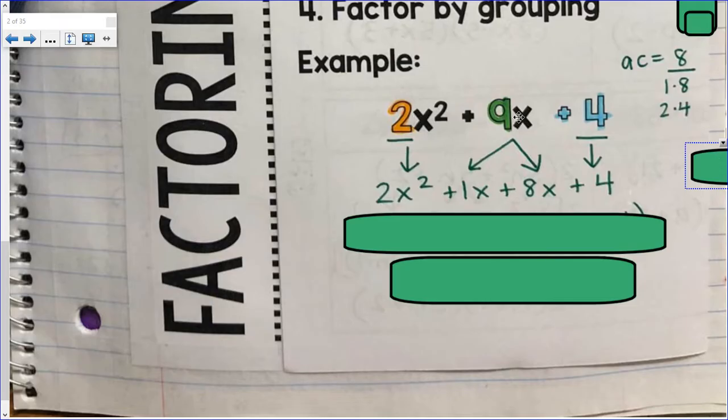So we're purposely turning this trinomial into a four-term polynomial. And now, we factor by grouping. And again, if you followed my factor by grouping video, this will be very simple for us. We have to visually separate the first two terms from the second two terms.